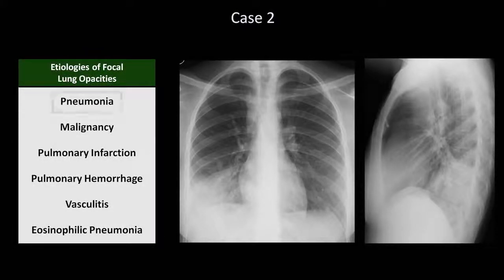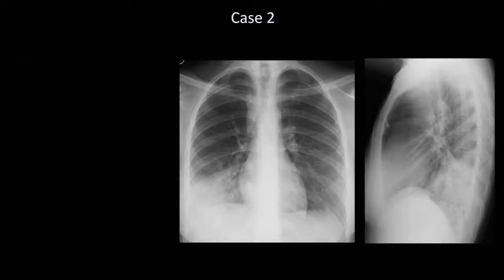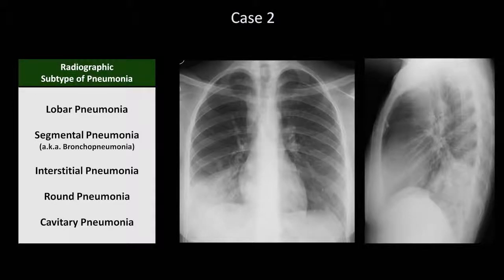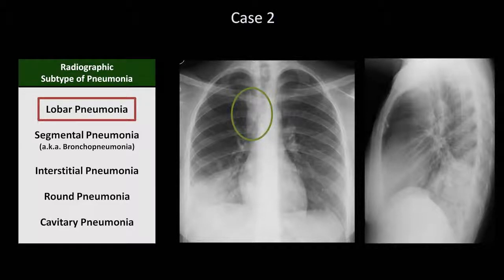In this case, pneumonia is by far the most likely. The patient is too young for malignancy to be likely, she has no suggestion in the history or exam of a DVT or PE, and the remaining diagnoses are much less common. In Lesson 8, I also discussed five radiographic subtypes of pneumonia. In this case, the consolidation is dense, appears to conform to the general shape of the right lower lobe, and there is no suggestion of cavitation. Therefore, this is a lobar pneumonia. In addition, although it is much more subtle, there appears to be some fullness just to the right of the trachea, which in the context of a probable pneumonia is most likely to be paratracheal lymphadenopathy.